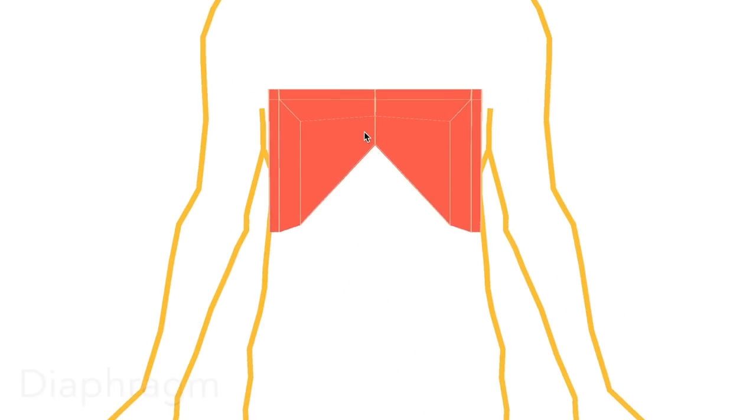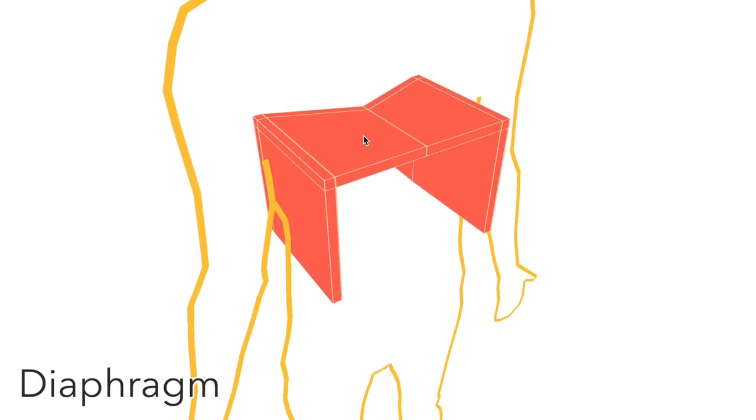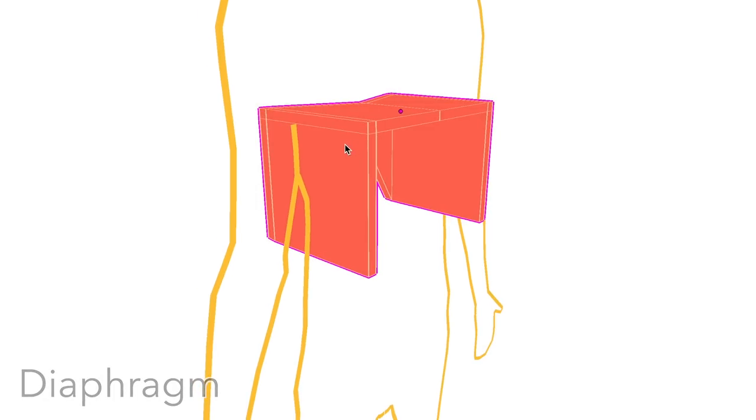The top boundary of the abdomen is the diaphragm. When it contracts, the lungs are pulled downward and the abdomen becomes smaller.